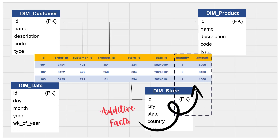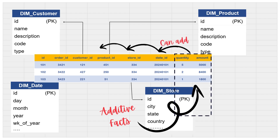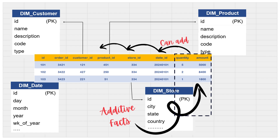Now, in order to understand what additive facts are, let's look closely at the units and quantity column. These measures can be summed up across any of the dimensions. If we do so, we can get the total amount or quantity as per the date range, store ID, or as per the customer. The result will always make sense. So additive facts are measures that can be aggregated or summed across any of the dimensions associated with the fact table.